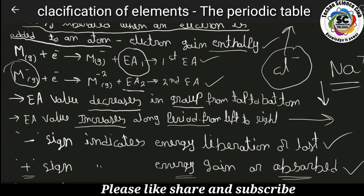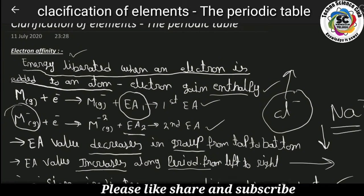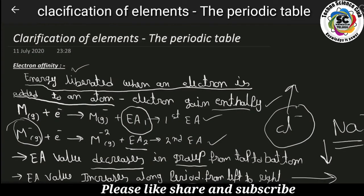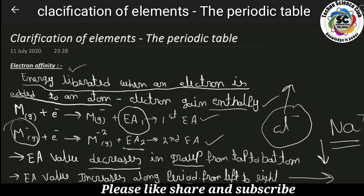What is electron affinity? Classification of elements in the periodic table — properties of elements. The next property, the fourth property, is electron affinity.